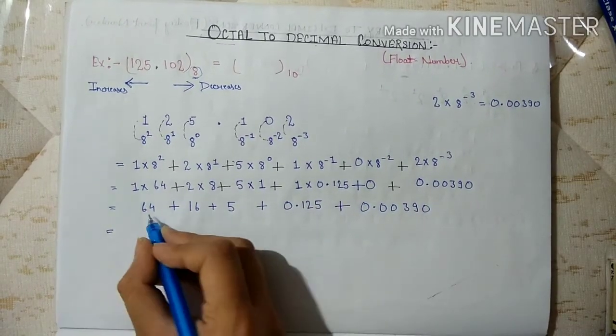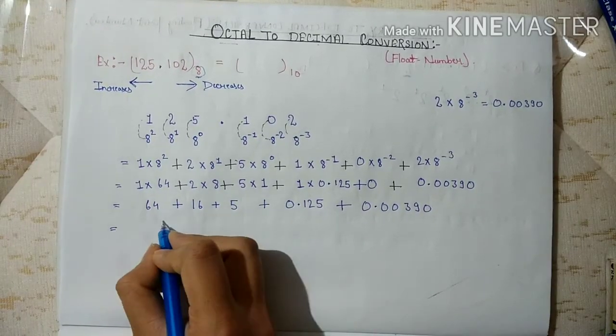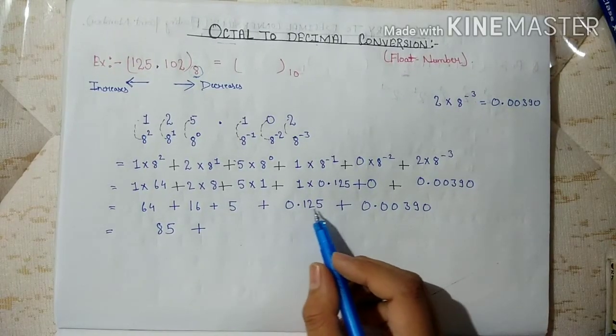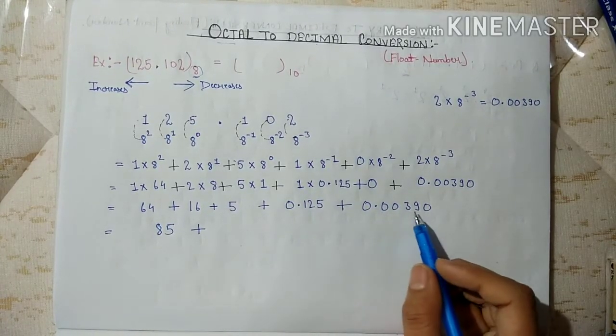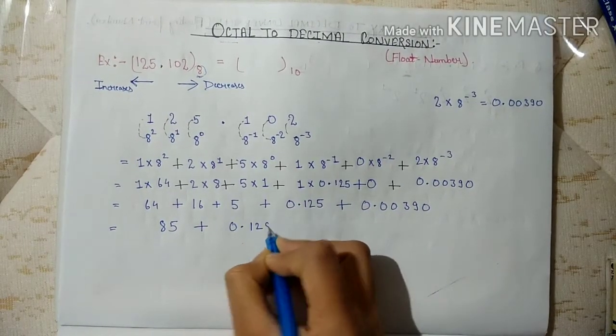Now, 64 plus 16 plus 5, after adding these 3 we get 85, plus, and after adding 0.125 and 0.00390, we get 0.12890.